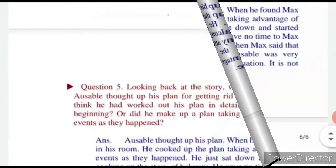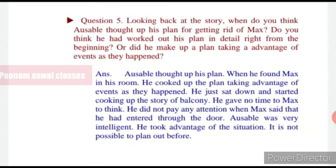Question number five: When do you think Ausable thought up his plan for getting rid of Max? Did he work out the plan in detail from the beginning, or did he make up the plan taking advantage of events as they happened? Kahaani ko dhyan mein rakhte hue, Ausable ne kis waqt Max se pichha chhudhane ki yojana banai — kya shuru se, ya phir ghatnaon ke saath saath?